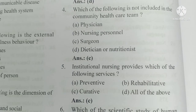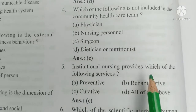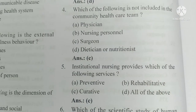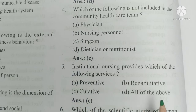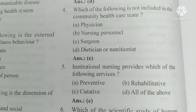Question number 5. Institutional nursing provides which of the following services? A) Preventive, B) rehabilitative, C) curative, D) all of the above. The answer is C, curative services.